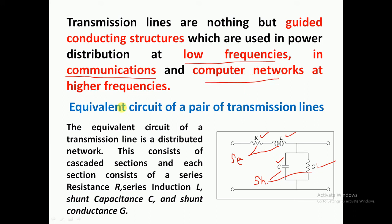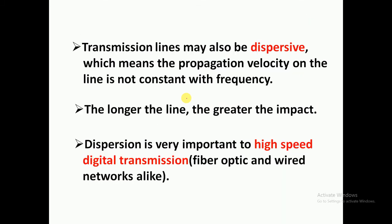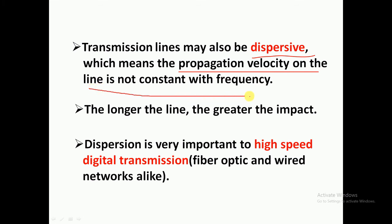The next point is that transmission lines are dispersive in nature. The meaning of dispersive is that the propagation velocity on the line is not constant with frequency. The longer the time, the greater the impact.